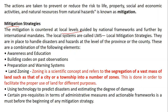Mitigation is encountered at local levels guided by national frameworks and further by international mandates. The local systems are called LMS — Local Mitigation Strategies — and are in place to handle disasters and hazards at the level of a province or country. There is a combination of elements: awareness strategy, educational strategy — for example, awareness during earthquakes, tsunamis, and cyclones — educating people and creating awareness about actions to be taken. Also, preparation and warning systems, especially for changes in weather, and building codes based on past observations.